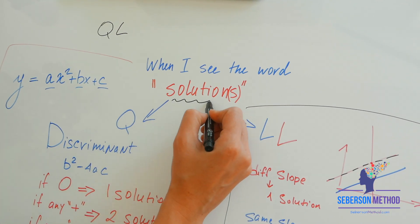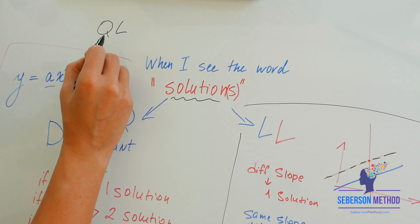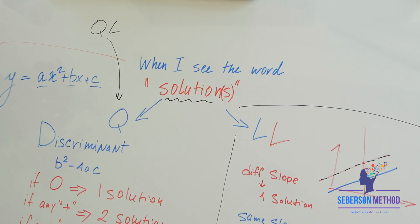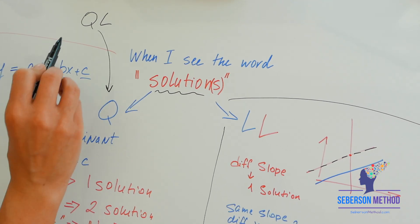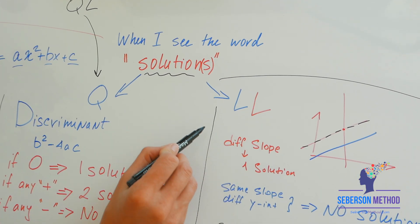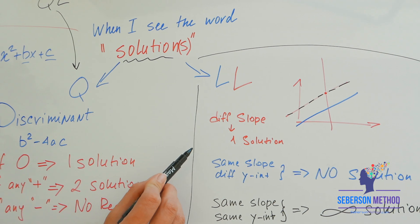And you're asked about solutions. You are going to combine the two equations and then you're going to follow the discriminant. So if you're dealing with a quadratic and a linear, you're going to use the discriminant. But if you have two linear equations, you're going to be using this system.